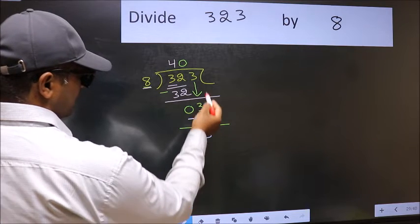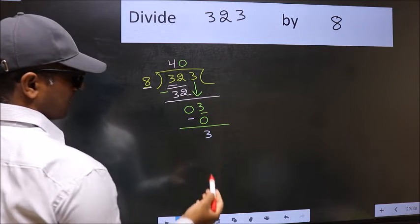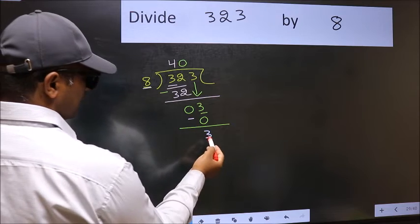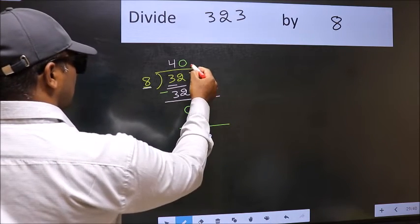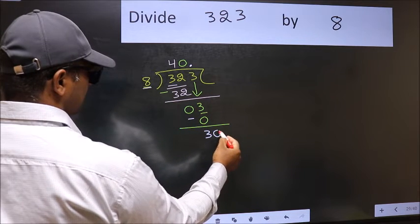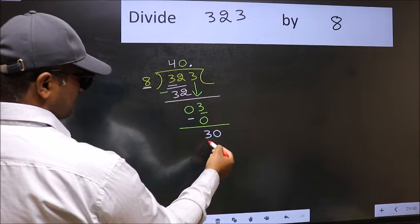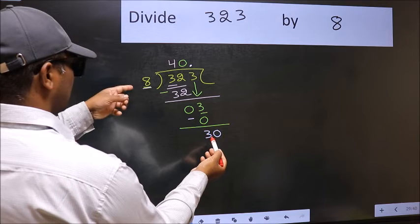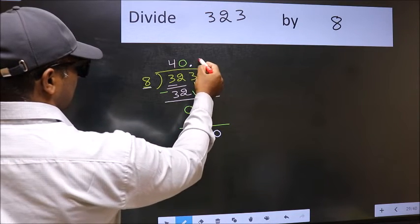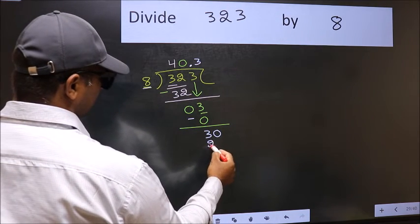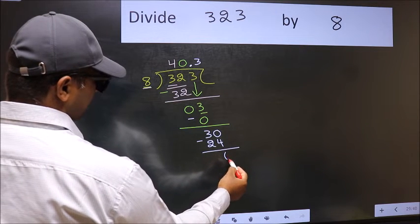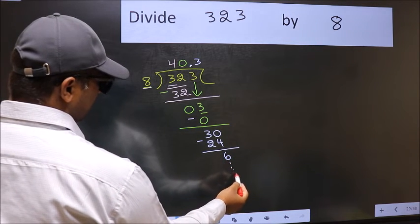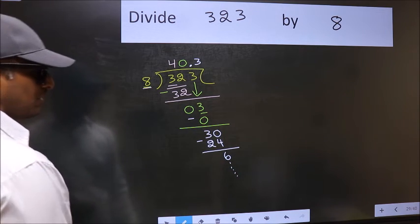Over here, we did not bring any number down, and 3 is smaller than 8. So now you can put dot and take 0, so 30. A number close to 30 in 8 table is 8 threes, 24. Now you should subtract, we get 6, and continue the division. I am not doing that.